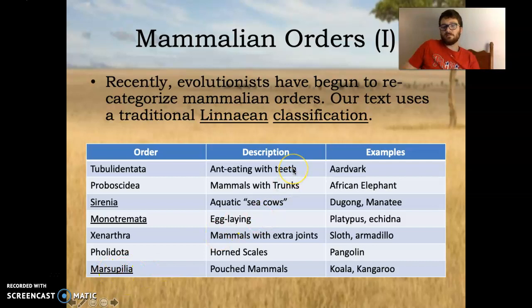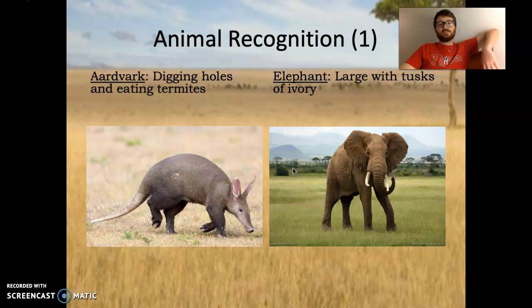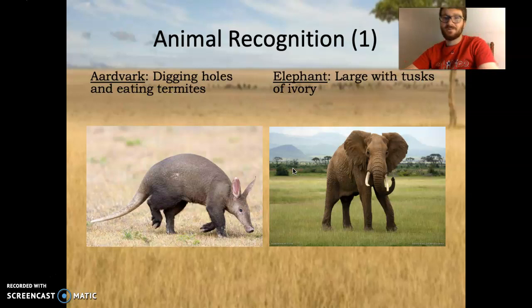In terms of special terms, a tusk is the ivory trunk within elephants. Some animals are diurnal — active during the day — and some are nocturnal, active during the course of the night. On this test we're going to have animal recognition, and I hope that you can name some of these animals. Some of them are going to be a little bit different, not as easy as something like an aardvark or an elephant.